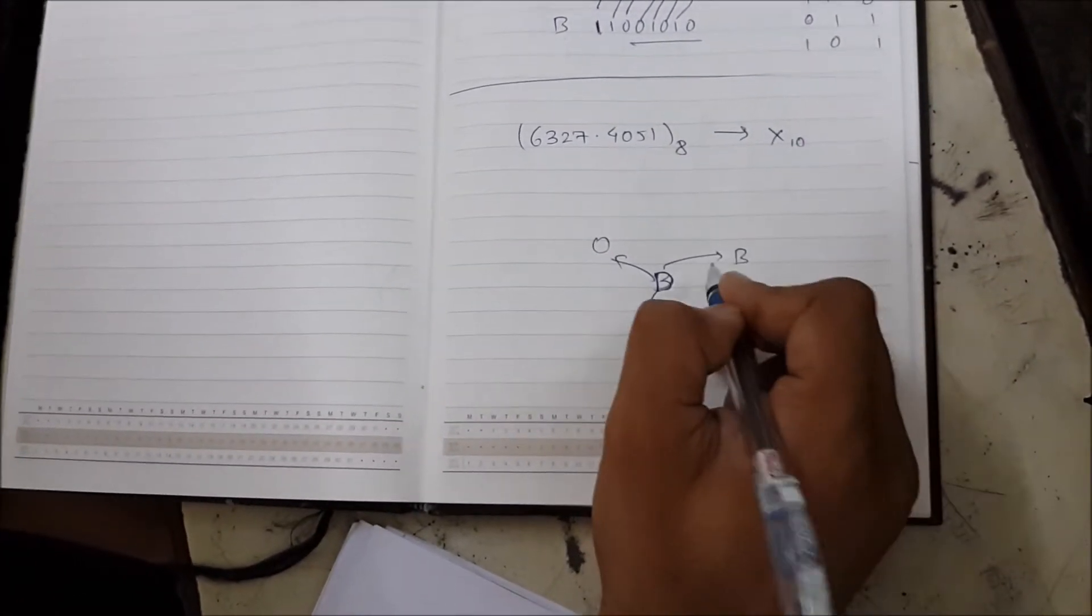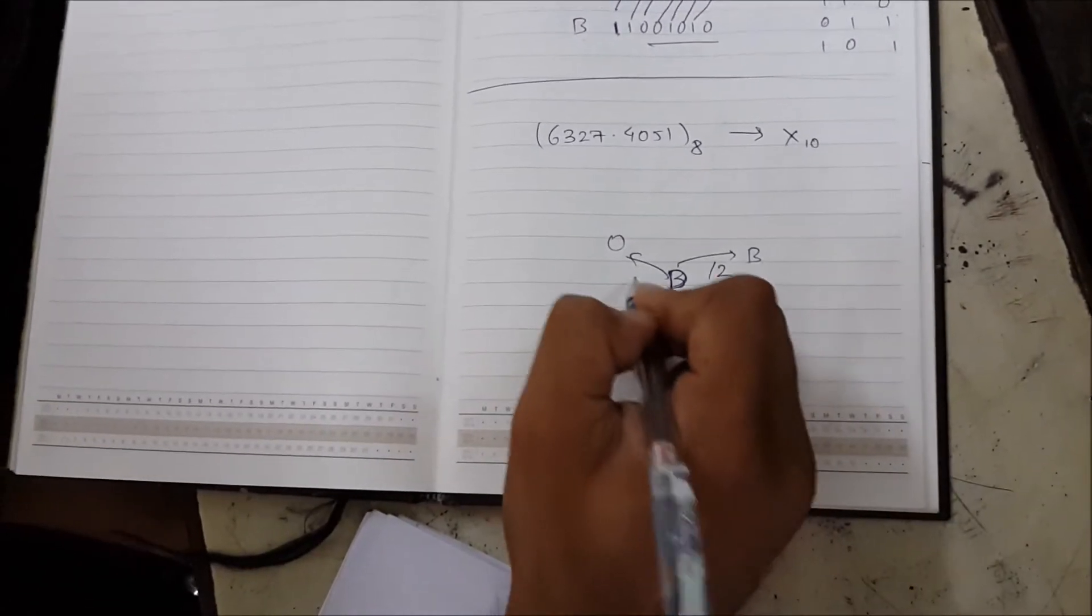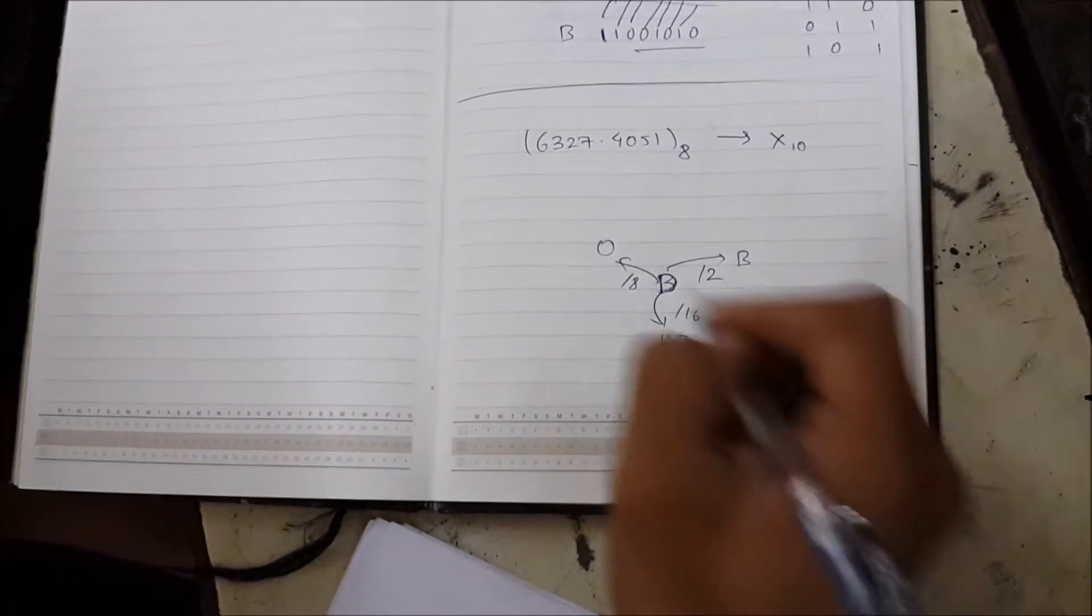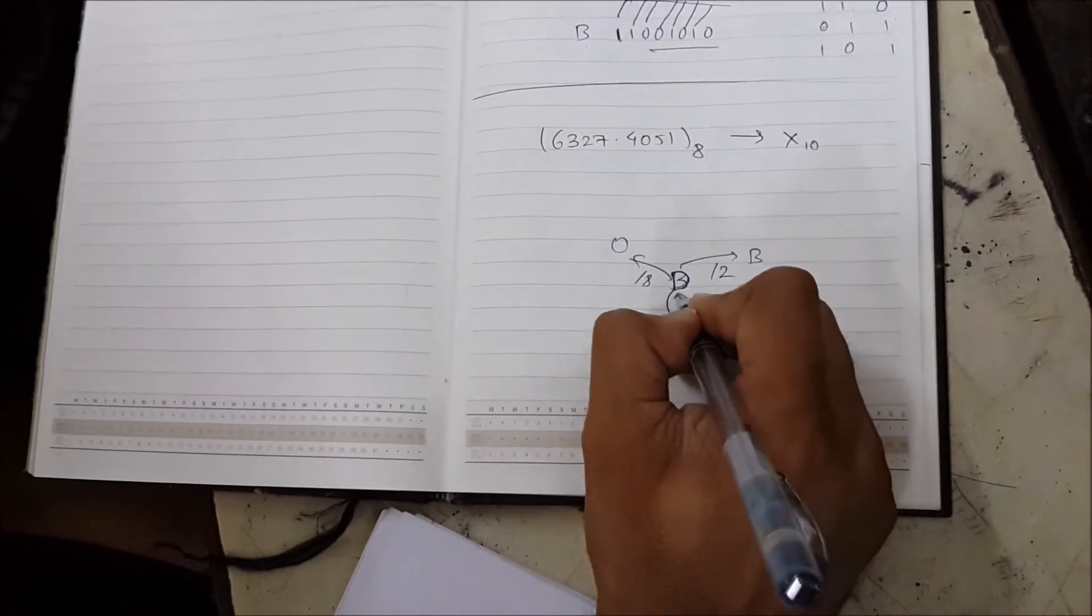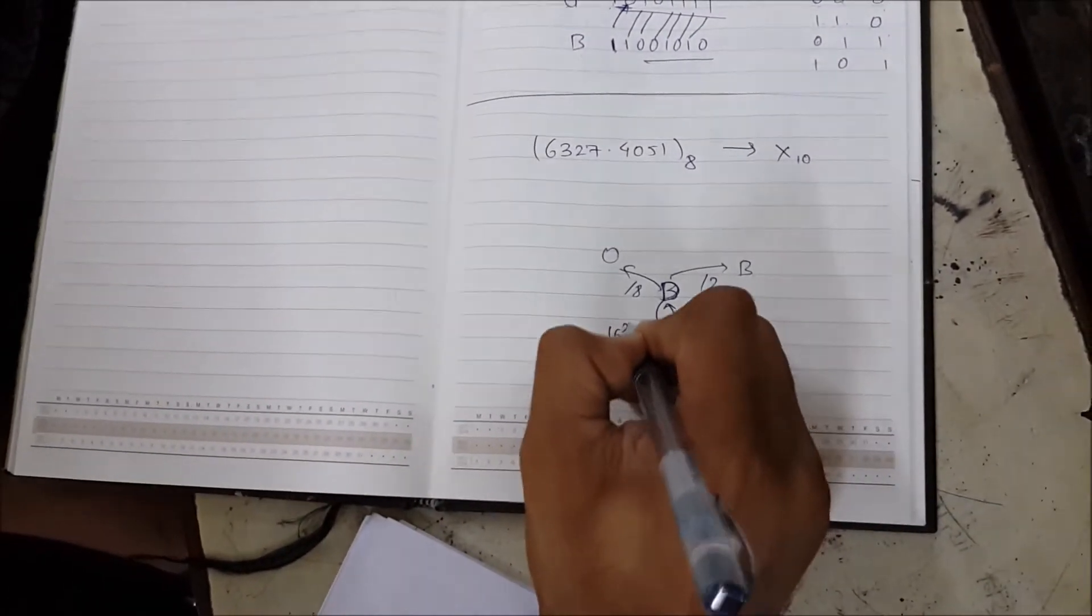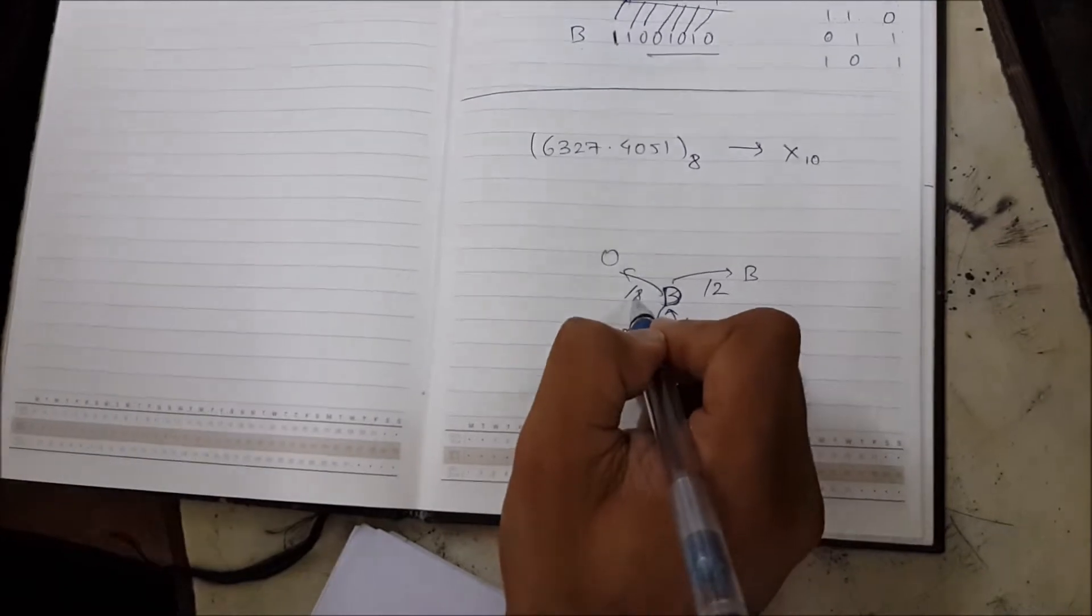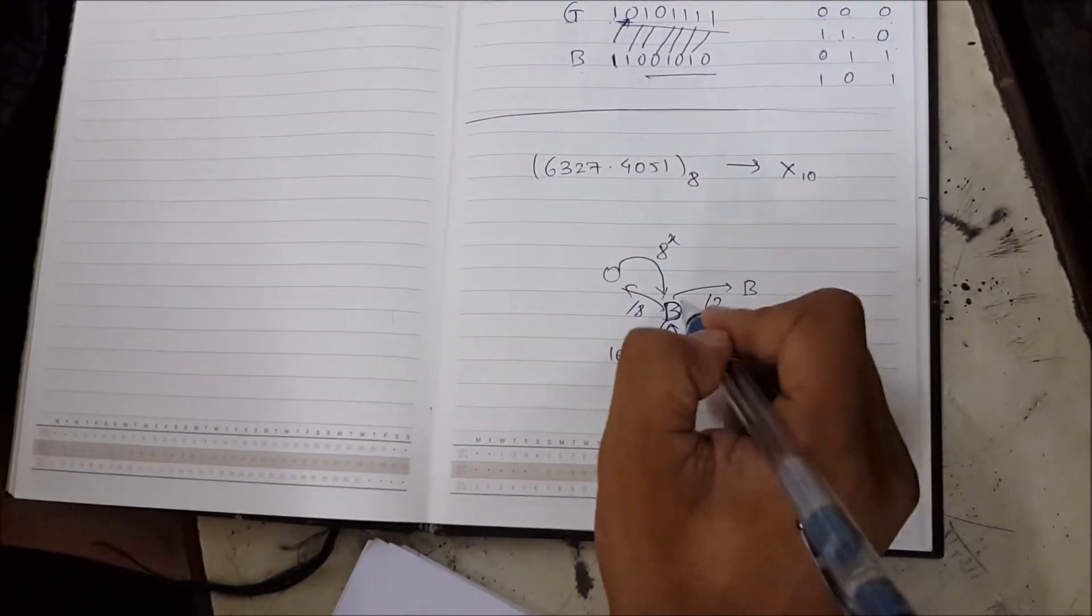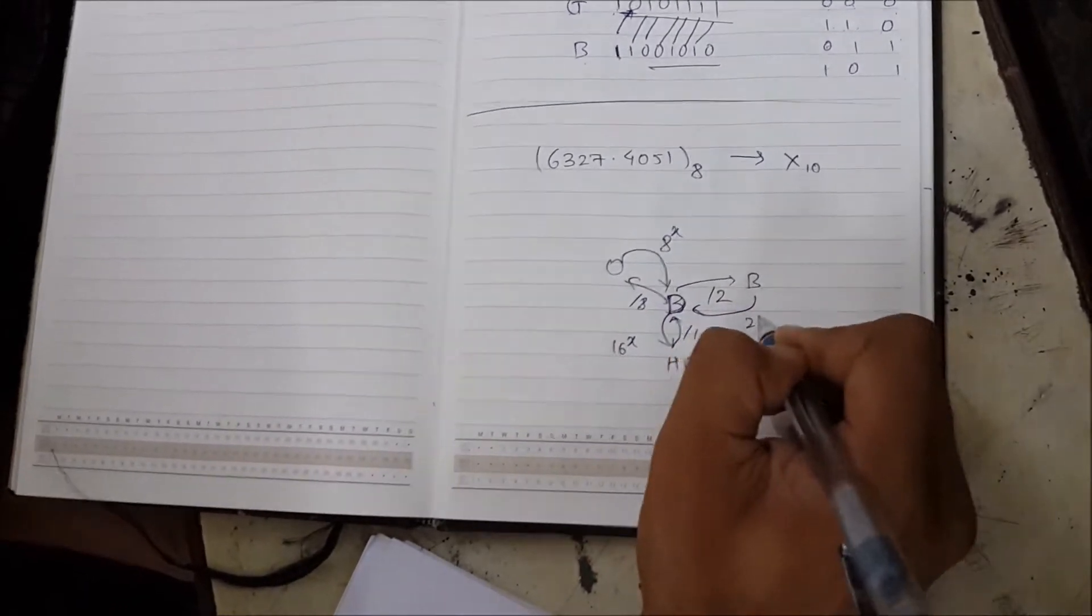We divide by the base. So for binary, divide by 2. For octal, divide by 8. And for hexadecimal, divide by 16. And to go back, from hexadecimal to decimal, we use power of 16. From octal to decimal, power of 8. And from binary to decimal, power of 2.